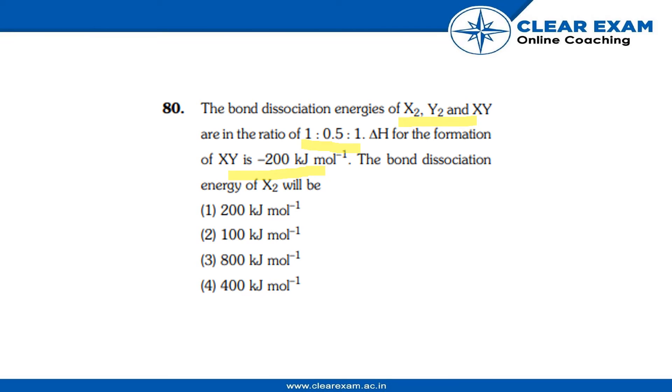Since the ratio is given as 1:0.5:1 and ΔH for the formation is -200 kJ mol⁻¹, the bond dissociation energy of X₂ will be 800 kJ mol⁻¹. The right answer is option 3.